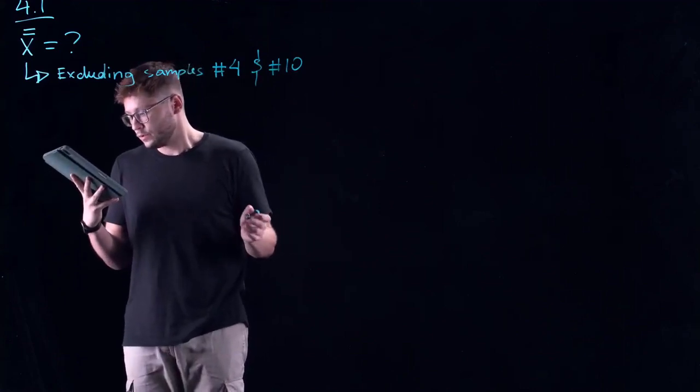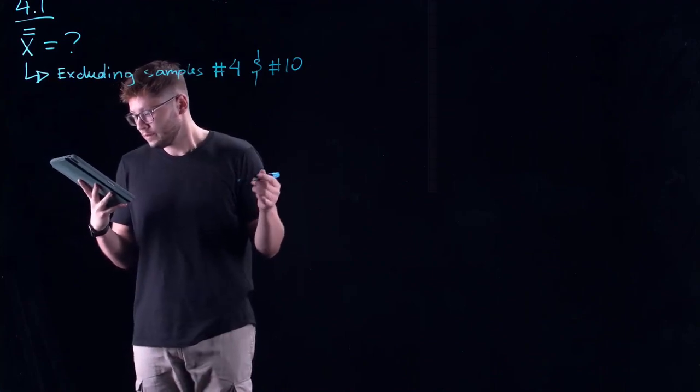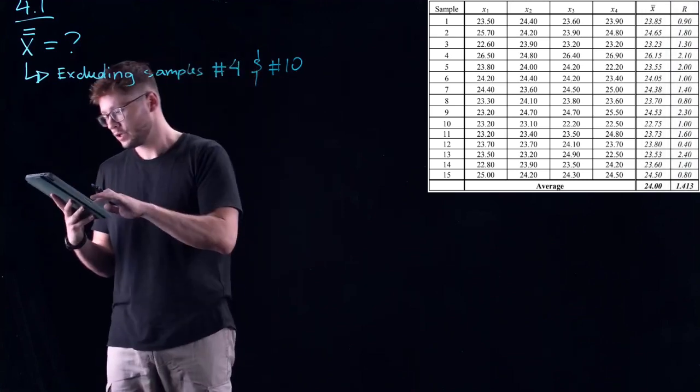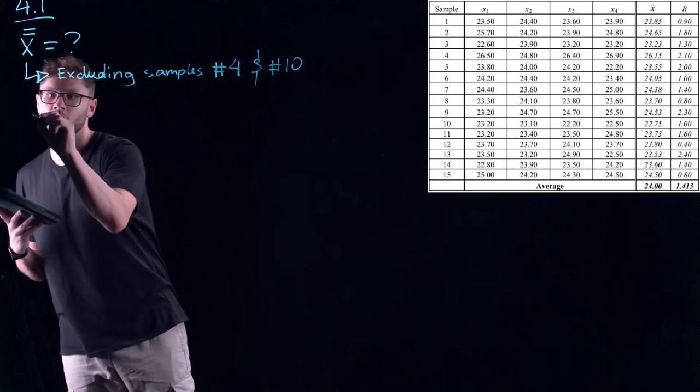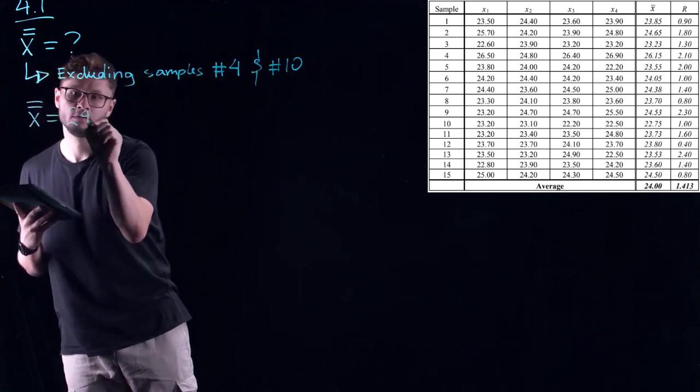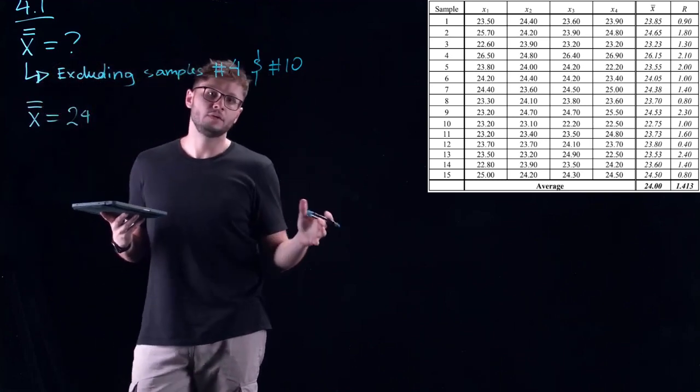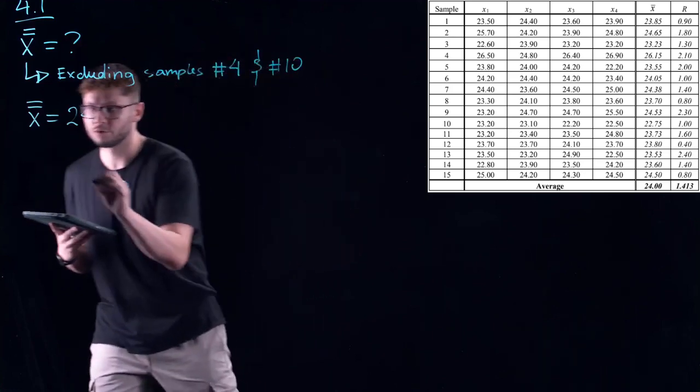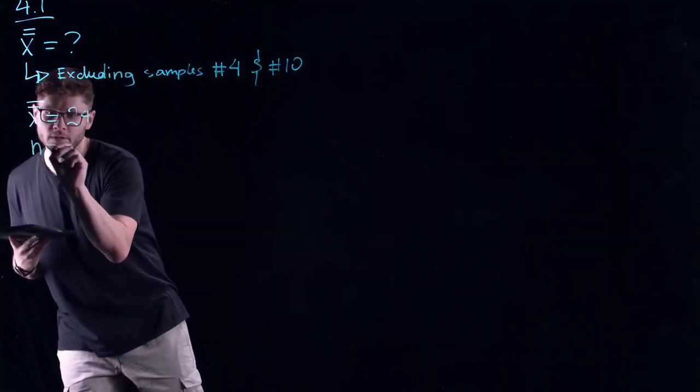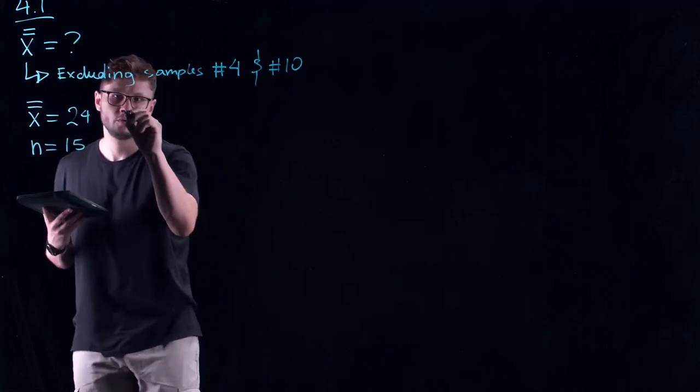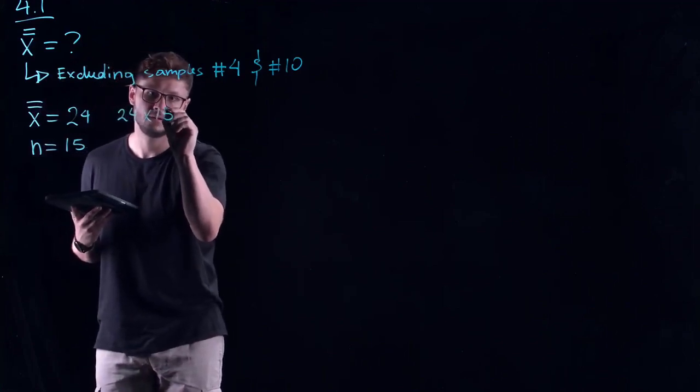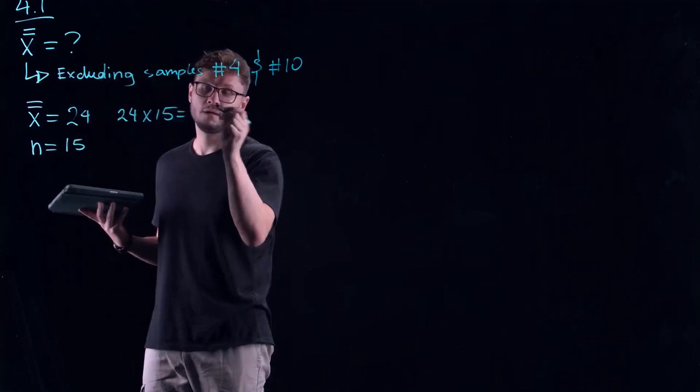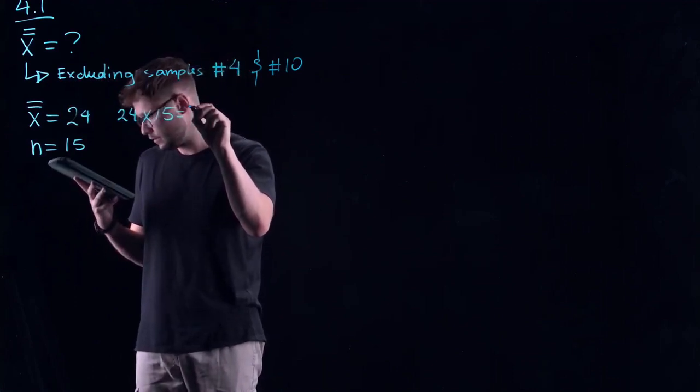The original average of averages equals 24. To get the sum of all of the averages, we can just multiply by 15, the number of subgroups. So if we do 24 times 15, that will give us that the sum of all of the x bar data would be 360.